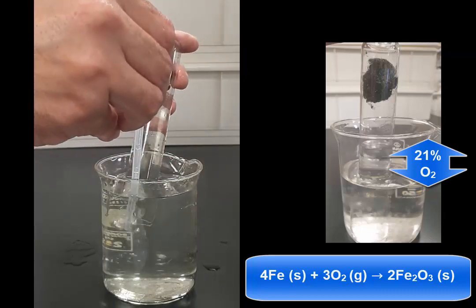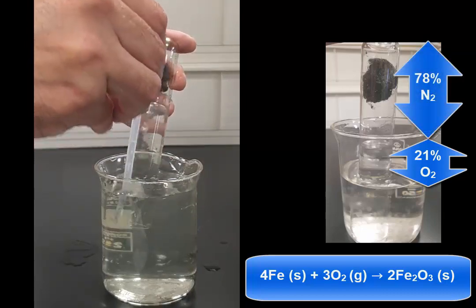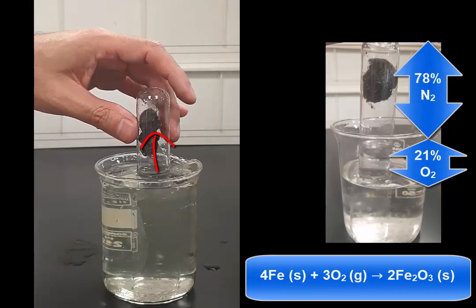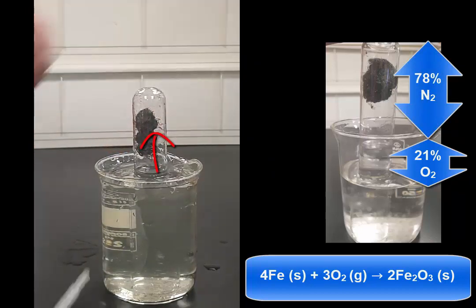The reaction is just here: 4Fe(s) + 3O₂(g) → 2Fe₂O₃(s). The oxygen in the air turns into rust, and then you can see how much oxygen there was.